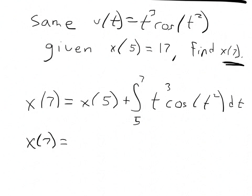So x of 7 is x of 5, which was 17, plus this integral. I'm going to pause the video and do this integral on the side and then bring the answer back to us. The integral I ended up with for this was negative 22.058. And so that means that our position at time 7 is, let's see here, negative 5.058.